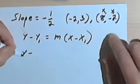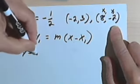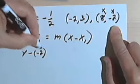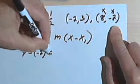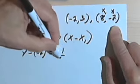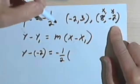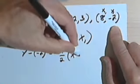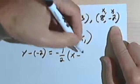Okay, so I want y minus y sub 1. Well, that's minus negative 2 equals m... well, m is my slope, so that's negative one-half, times x minus x sub 1, which is 8.